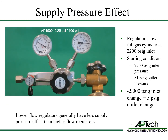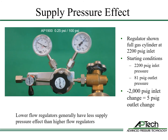Now we will demonstrate the supply pressure effect on the AP1900. Again, the inlet pressure is 2200 psi and outlet pressure is 81 psi. The 2000 psi drop in inlet pressure only causes a 5 psi increase in outlet pressure. The AP1900 supply pressure effect is only 0.25 psi per 100 psi inlet pressure change. Lower flow regulators generally have less supply pressure effect than higher flow regulators.